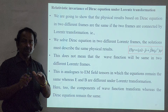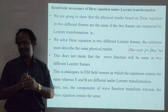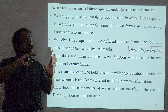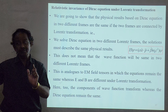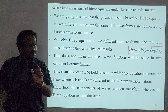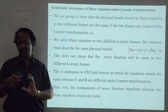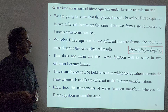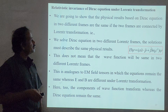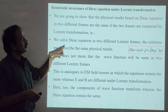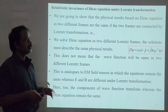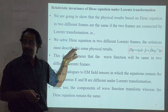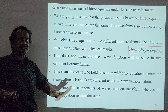Lorentz Transformation is performed through a matrix — we have a column vector, multiply by a matrix, and get another column vector. One column vector is one coordinate system, the other is a different coordinate system. The transformation is performed through a matrix. We solve the Dirac equation in two different Lorentz frames, and the solutions must describe the same physical results — they are invariant.